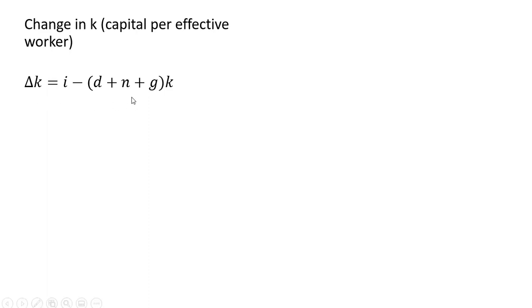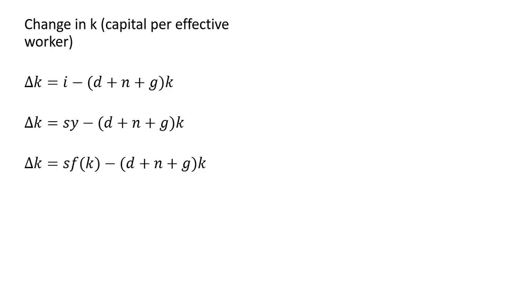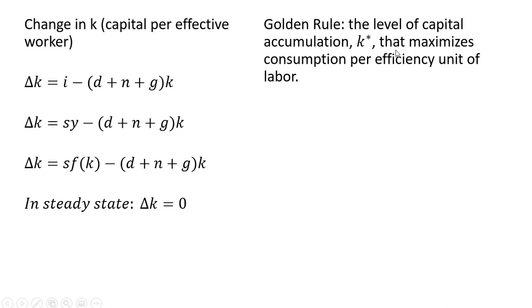A change in k — capital per effective worker or capital per efficiency unit of labor — can be written as investment (thought of as S times Y, where Y is the production function on a per-efficiency-unit-of-labor basis) minus the breakeven investment term. In the steady state, the change in lowercase k, capital per efficiency unit of labor, is going to be 0. The golden rule is the level of capital accumulation, k*, that maximizes consumption per efficiency unit of labor.